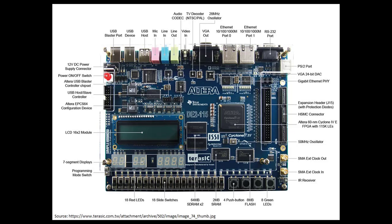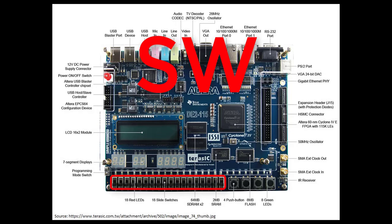The Altera board has 18 switches. Port SW is a multi-bit port with each bit corresponding to a switch. You can reference individual switches or a range of switches.